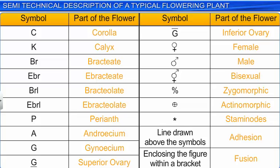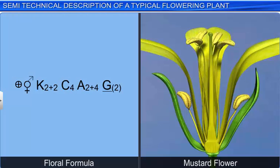Let's understand the symbols in the floral formula of a mustard flower. The mustard flower is actinomorphic and bisexual. The calyx has four sepals arranged in two rows, and the corolla has four petals. There are six stamens arranged in two rows, and the gynoecium is bicarpillary and syncarpous with a superior ovary.